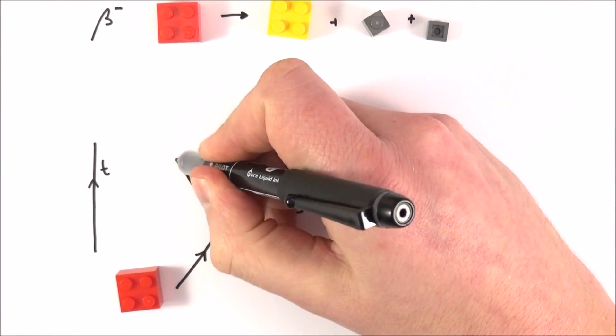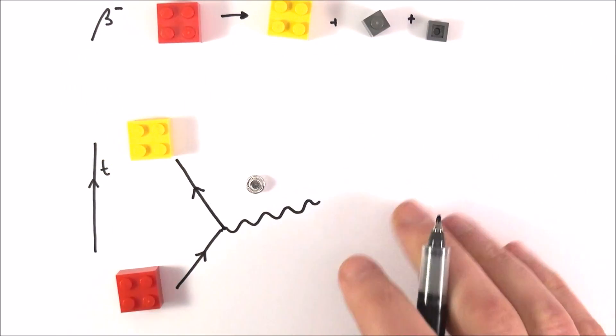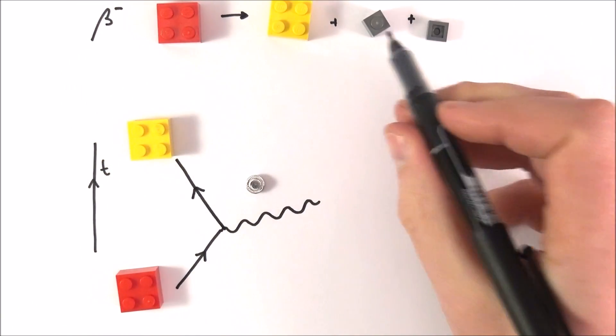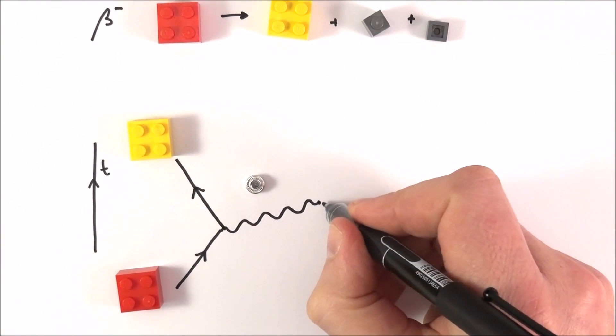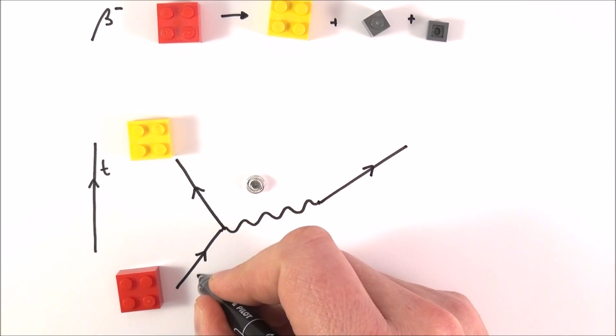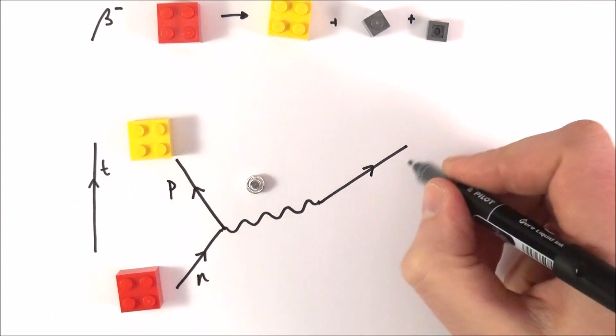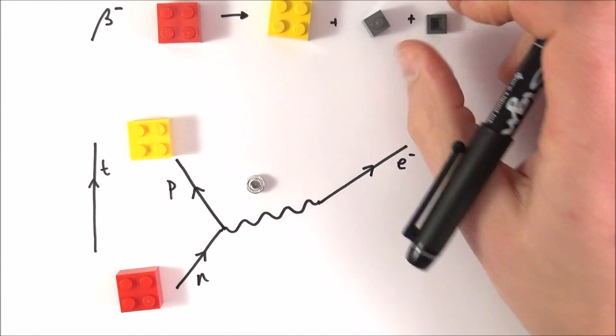What do we produce in this? Well, we produce this thing here. This thing here is a proton, which I'm going to put as coming out in this direction. We also get given out an electron and an anti-electron neutrino. So if I draw my electron, I'm going to draw it a bit like this. So this is my neutron, that's my proton, and this is my electron.